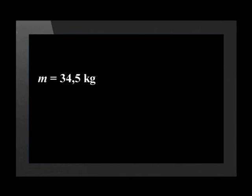With this information, we can calculate the projectile's change in momentum. But first, we need to know the mass of the projectile. The projectile's mass is 34.5 kilograms. The initial velocity is 0 meters per second. The final velocity is 1,575 meters per second.